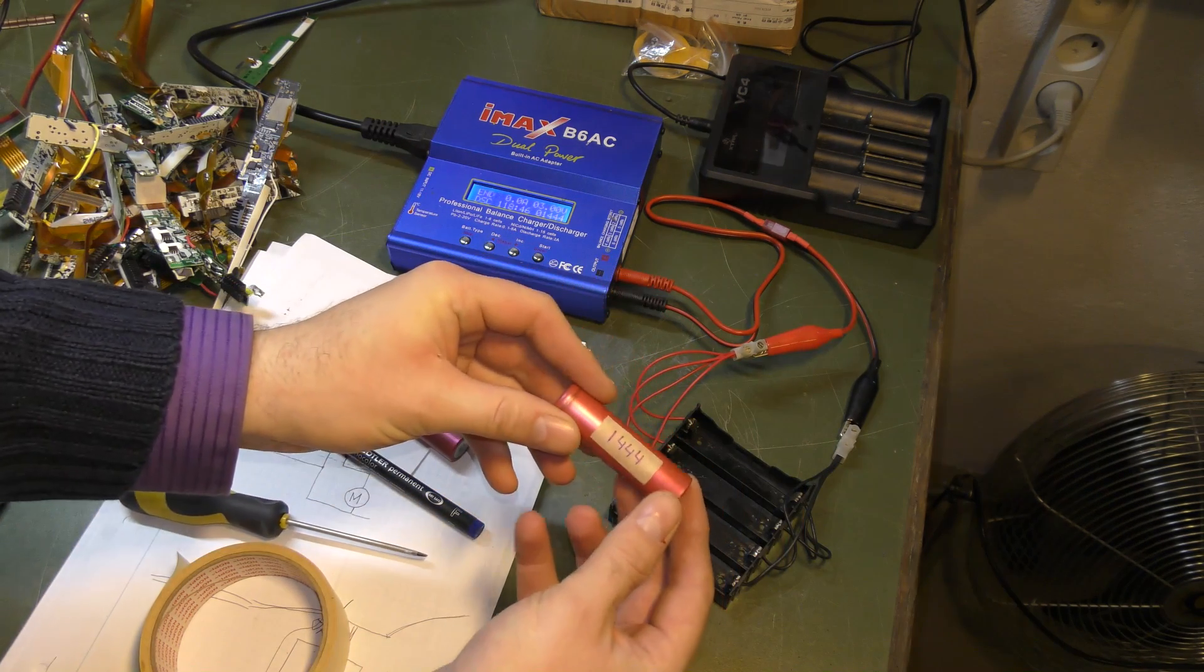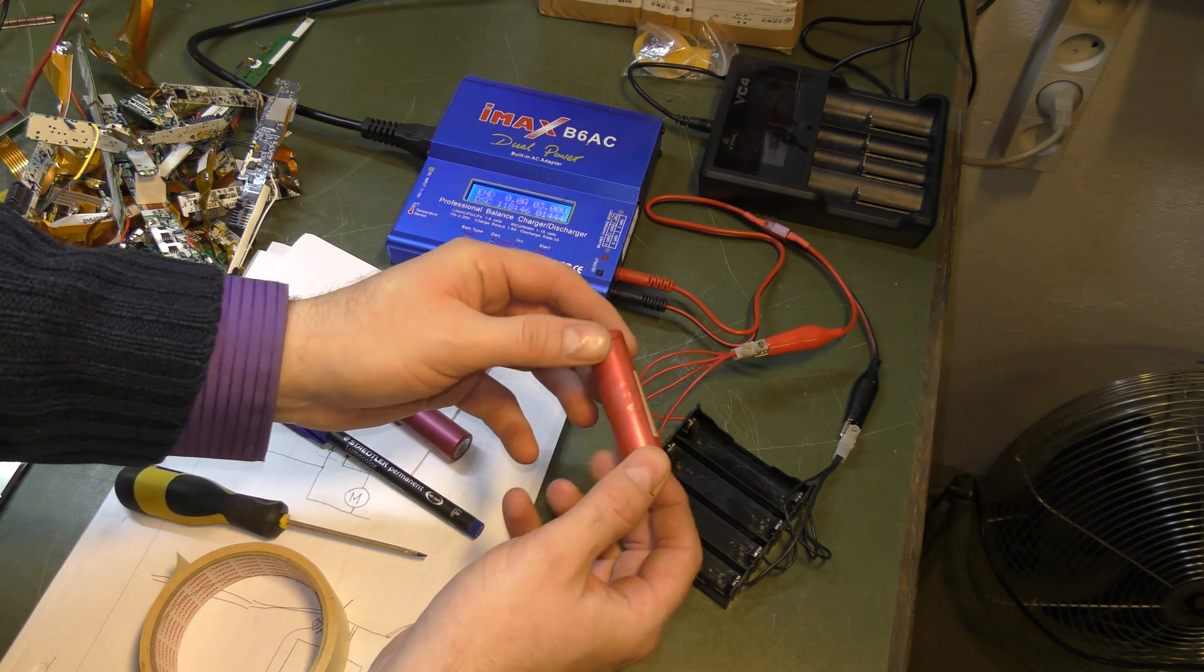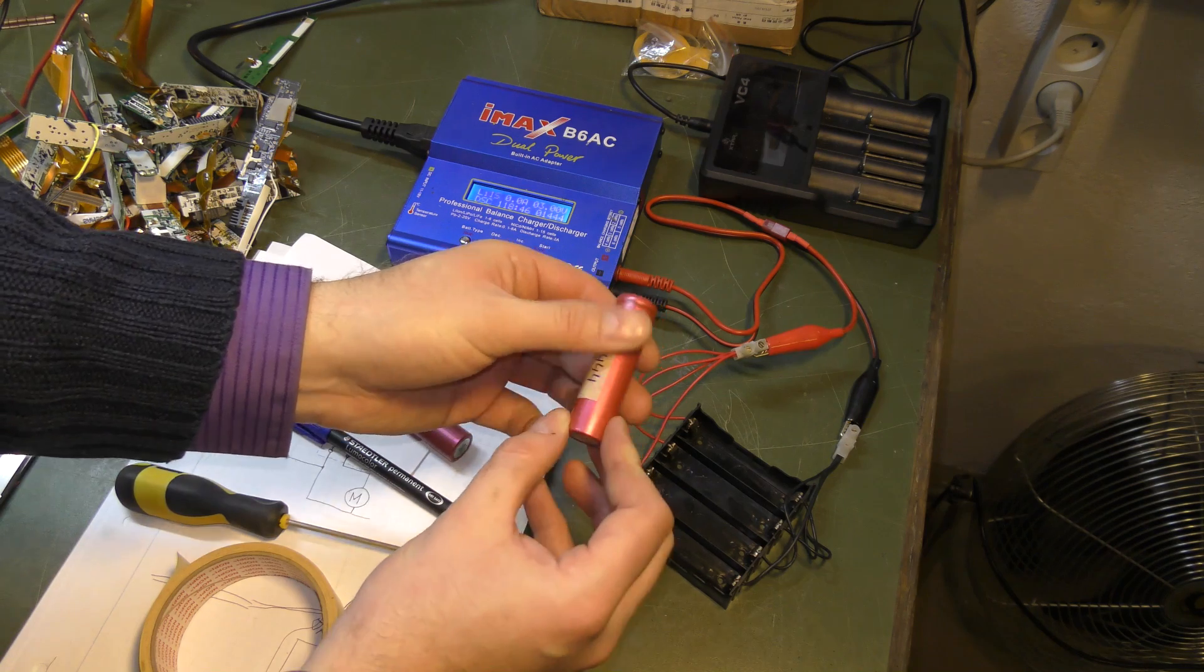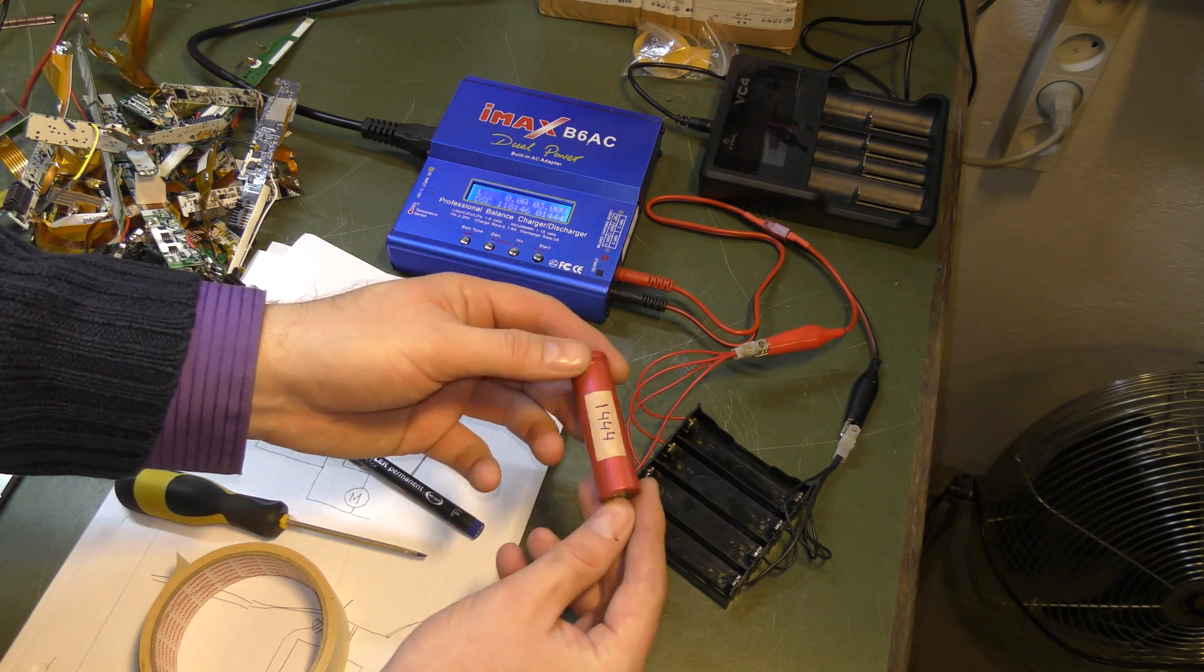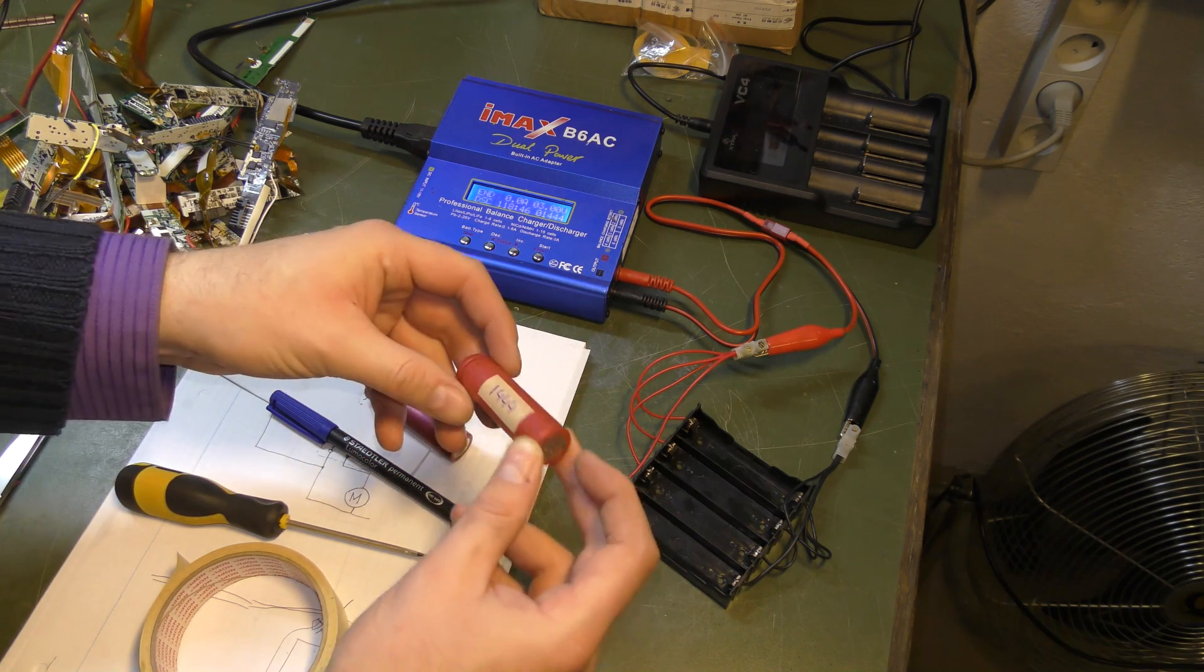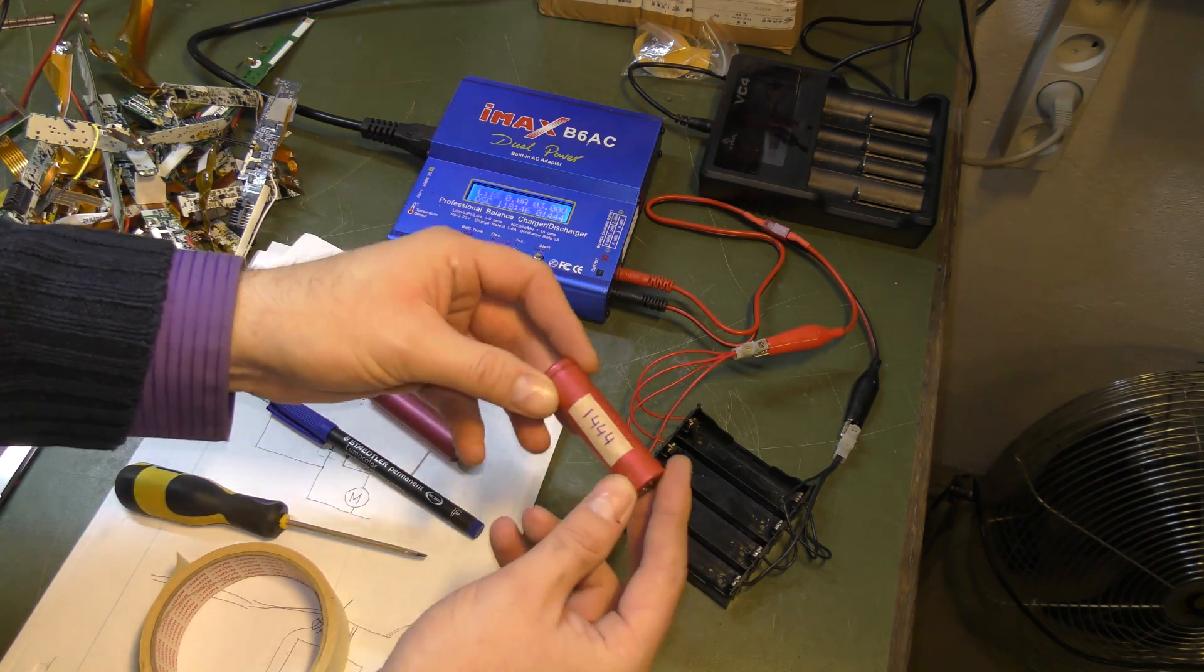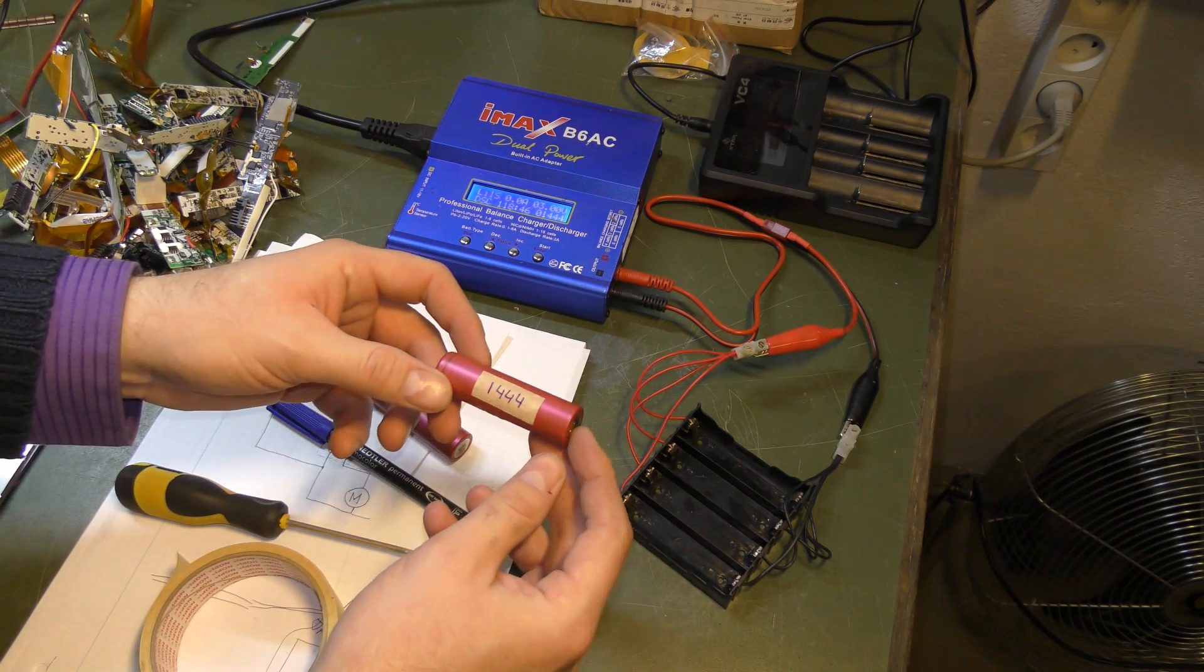And I've already written on it that this battery holds 1,444 milliamp hours. And I discharged them with 1.4 amps. And I was told that that's way too much. You're only supposed to discharge batteries like this with 400 milliamps. And I thought, whoa.